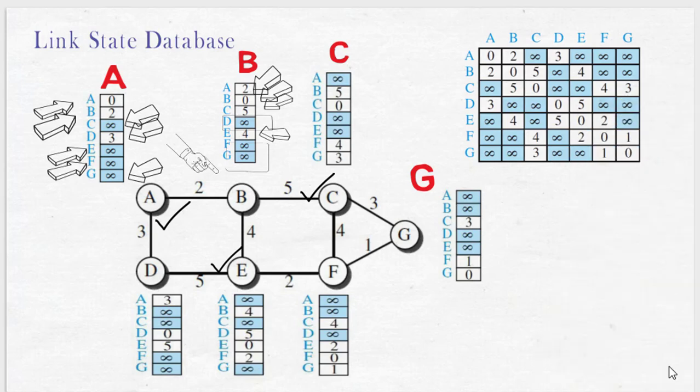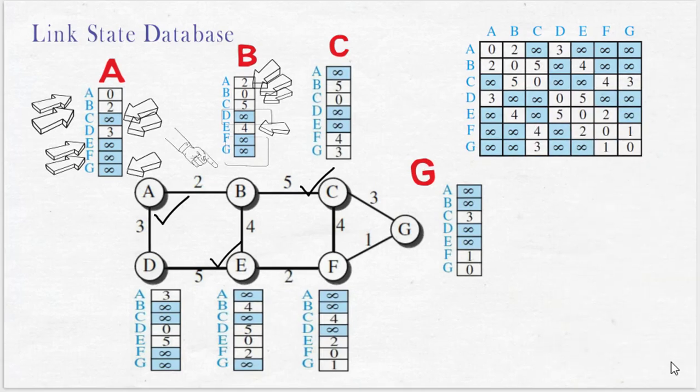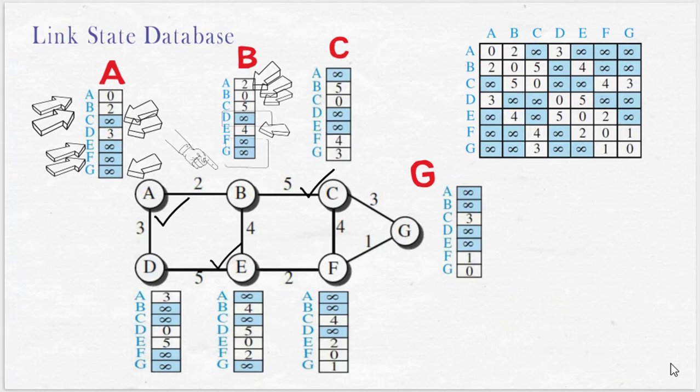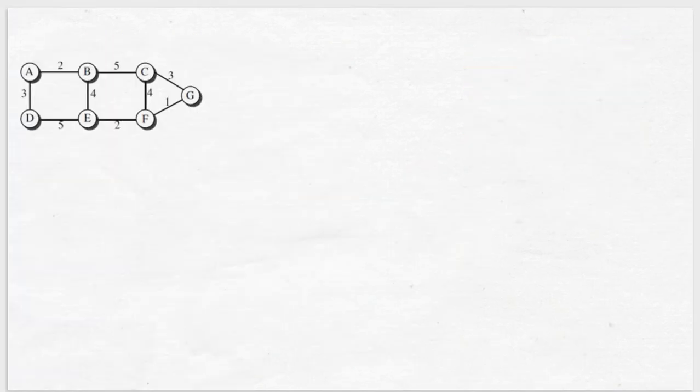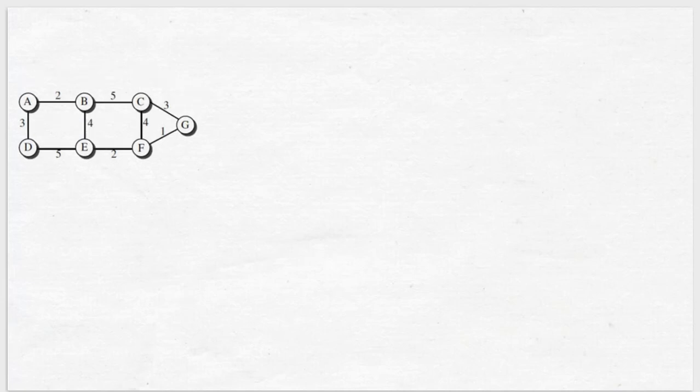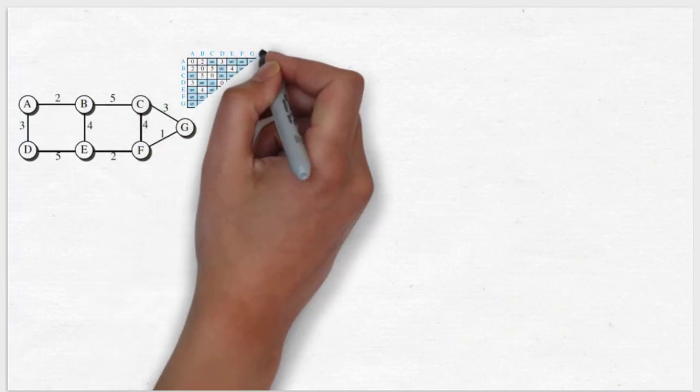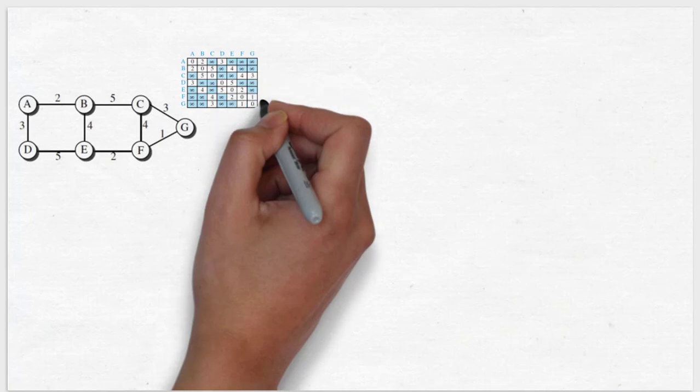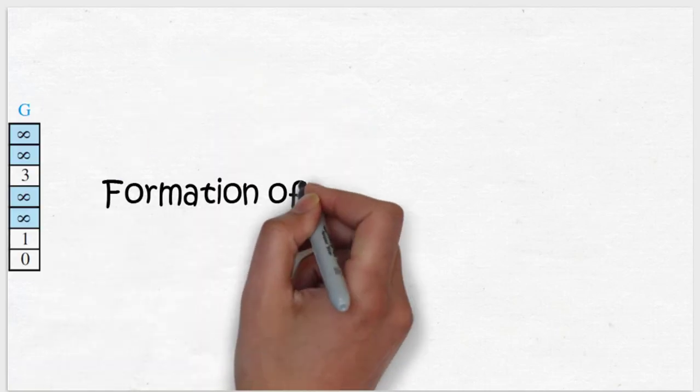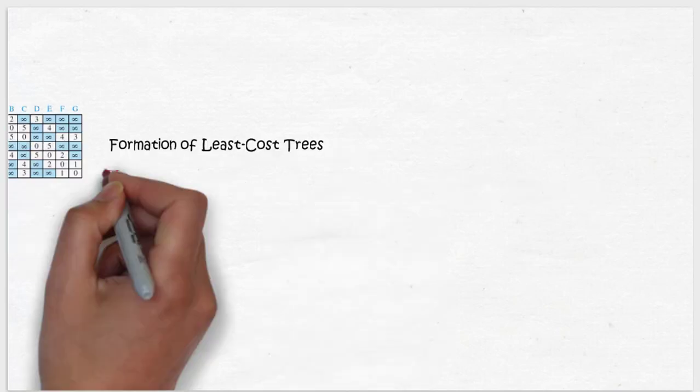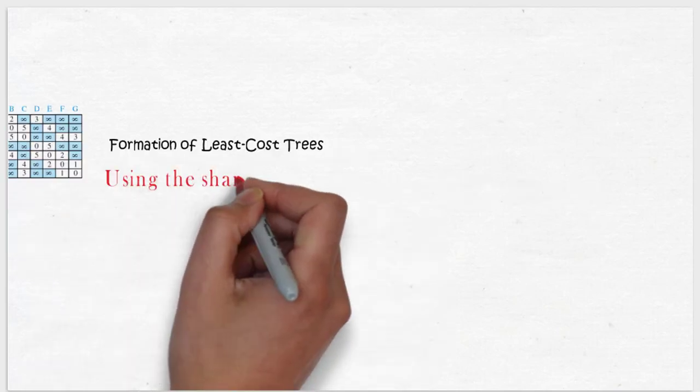Then information of all these links are to be known by every node so that the least cost tree for each node, the cost from every node to other nodes, can be determined. For example, let us take node A as source. Here we say the node having the network database finds the least cost tree for node A using Dijkstra's algorithm, and from the least cost tree, the routing table for node A can be determined.